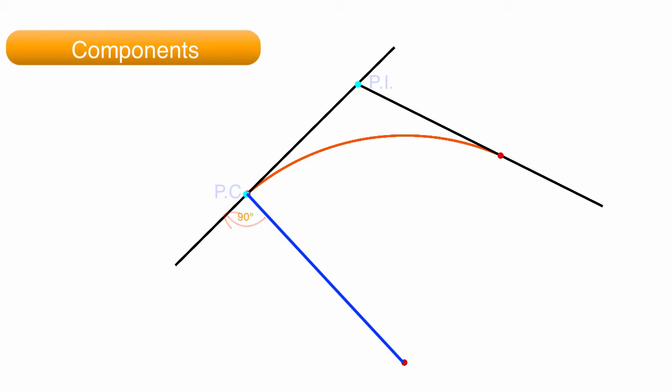The end of the curve is known as the point of tangency, or PT. A line going from the tangent line of the road to the center of the curve at the PT forms a 90 degree angle.